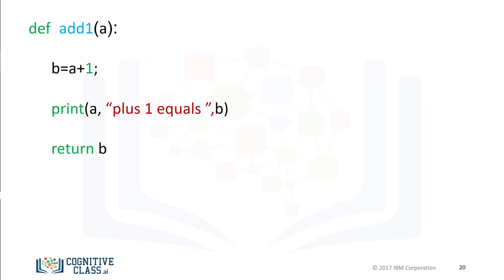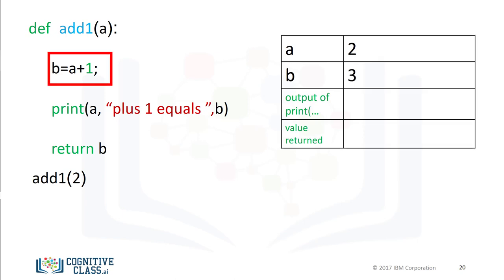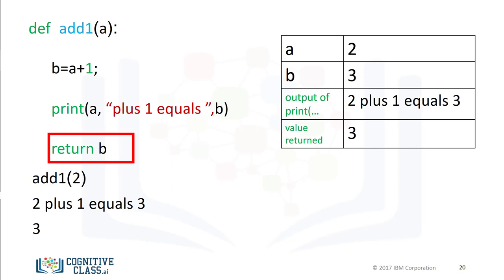Usually functions perform more than one task. This function prints a statement then returns a value. Let's use this table to represent the different values as the function is called. We call the function with an input of 2, find the value of b, and the function prints the statement with the values of a and b. Finally, the function returns the value of b — in this case, 3.